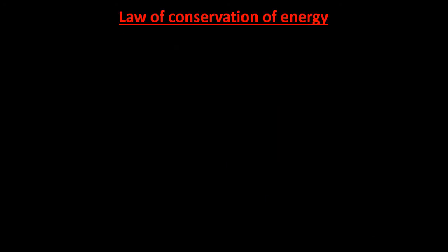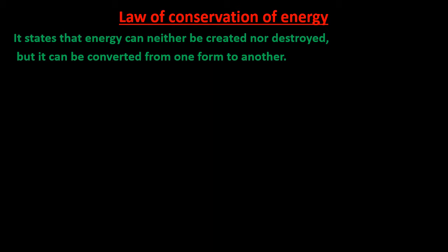Hello everyone. In the previous part of the video we discussed the derivation for finding the expression for kinetic energy and also the expression for potential energy. In this video we'll discuss the law of conservation of energy and power. The law of conservation of energy states that energy can neither be created nor destroyed, but can be converted from one form to another. This means the total energy will remain fixed, but that energy may transform from one form into another.